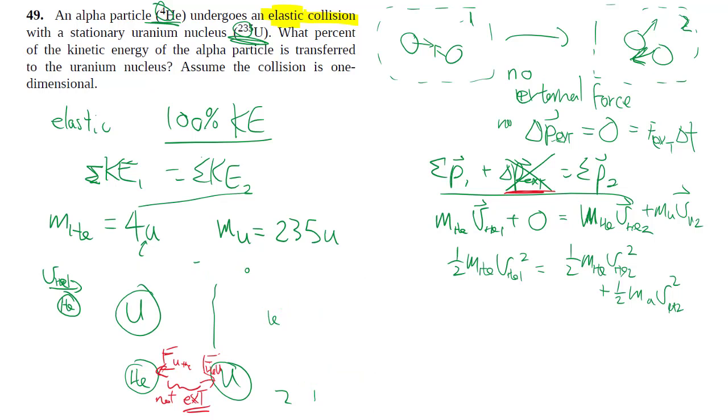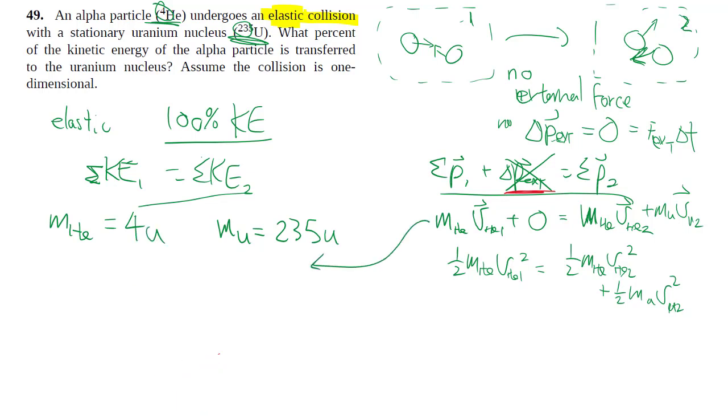We have two equations for the two unknowns, so we do a bunch of math and everything will work out. From the first equation we can solve for one thing in terms of the other. In the end we want to relate the kinetic energy of the uranium nucleus after with the kinetic energy of the alpha particle before—that's v_U2 compared to v_alpha1.